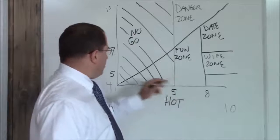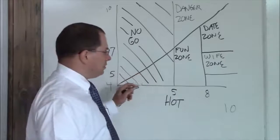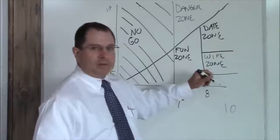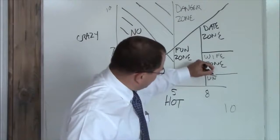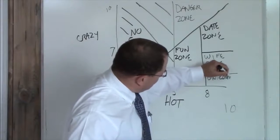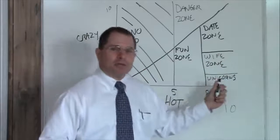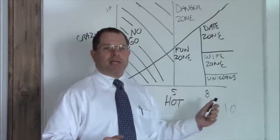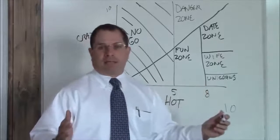Now, below a 5 crazy, and above an 8 hot. This is your unicorn zone. These things don't exist. If you find a unicorn, please capture it safely, keep it alive. We'd like to study it, and maybe look at how to replicate that.